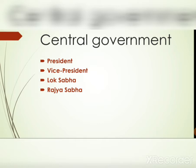What is the central government? The central government, or government at the center, is also known as the Union government. It comprises of the President, the Vice President, the Lok Sabha, and the Rajya Sabha. In this chapter we will learn all these things in detail.